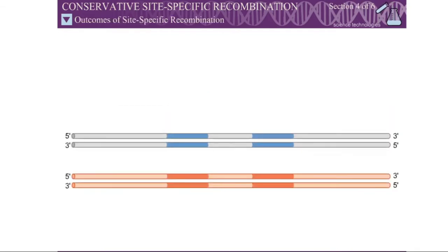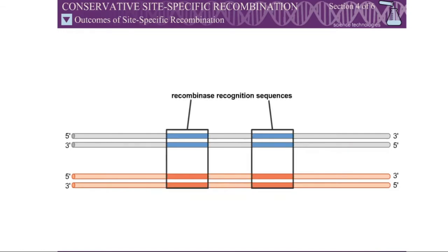Each recombination site is organized as a pair of recombinase recognition sites positioned symmetrically. These sequences flank a central short asymmetric sequence where cleavage and rejoining occur, called the crossover region.